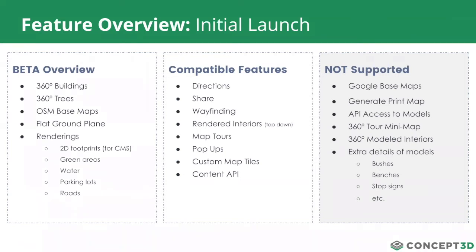Things you won't expect to see working today: Google base maps — Google doesn't provide a lot of the technology needed to implement this to their developers, so we'll see what they expose to us in the near future. Generate print map is in the works but not working today. You can't access our models via API, and they aren't currently displaying in 360 Tour. Some details you see in renderings today, such as bushes, benches, and stop signs, we aren't modeling those out from a performance perspective, but that's something you might see in the future. 3D interiors are also not supported, but those are coming in 2021.